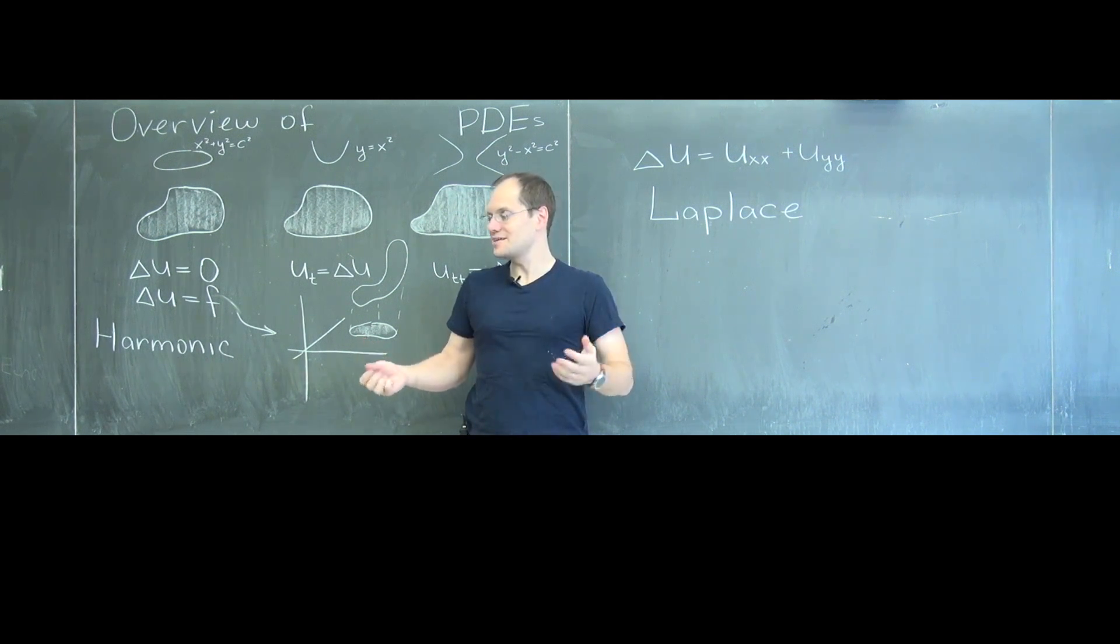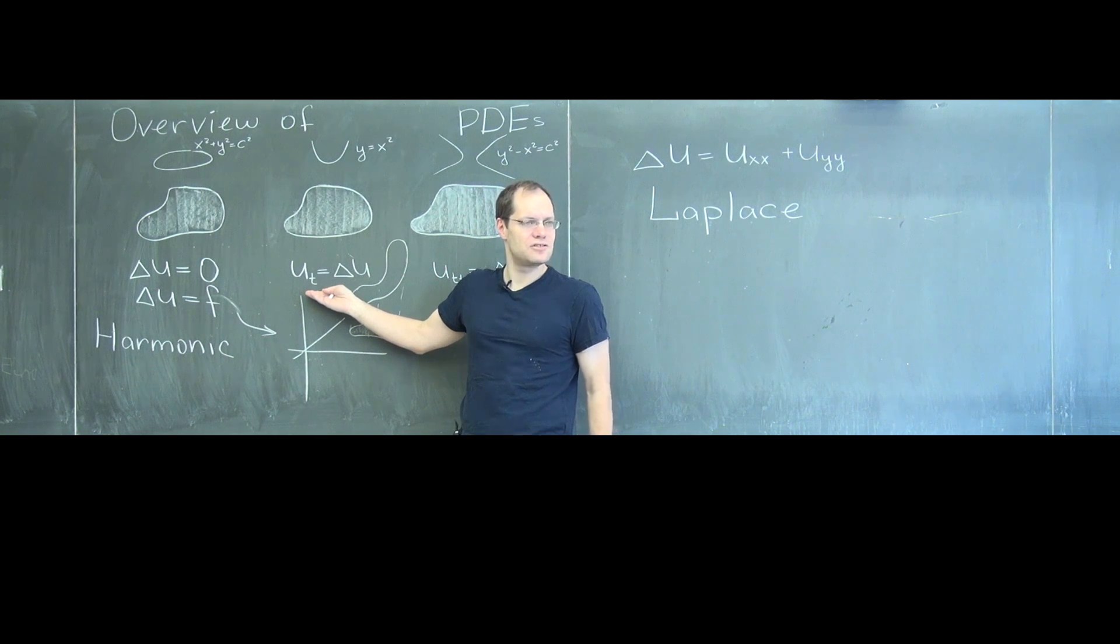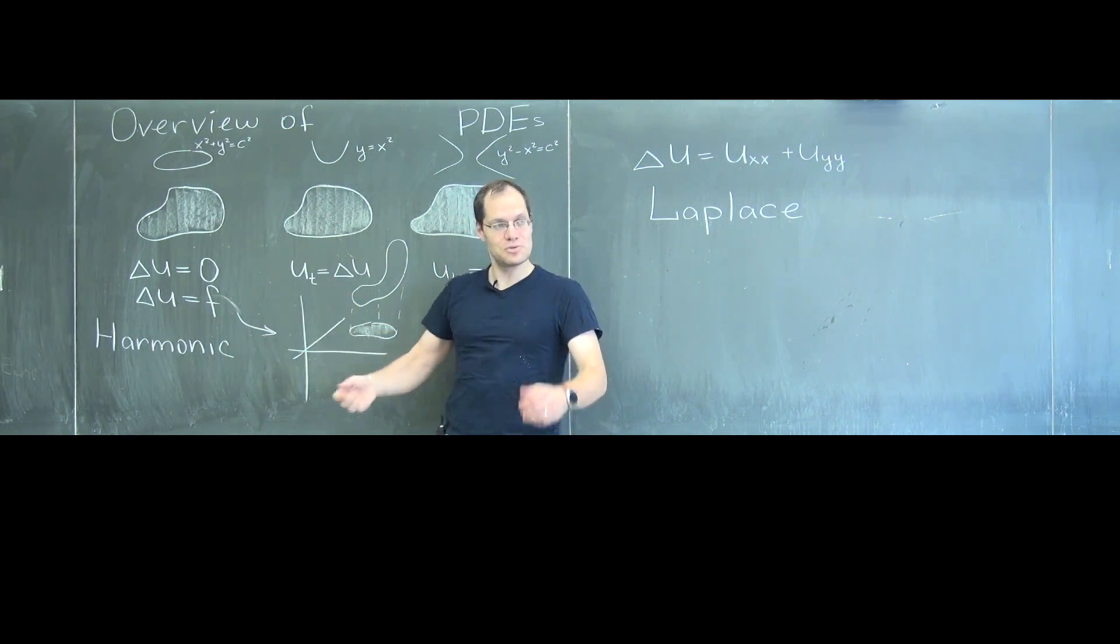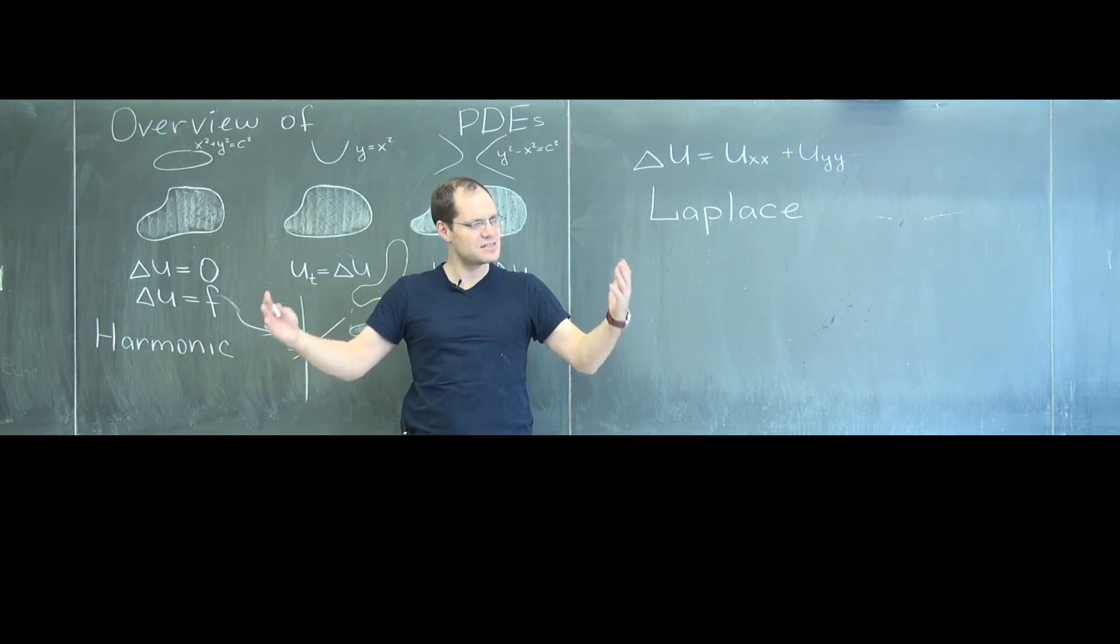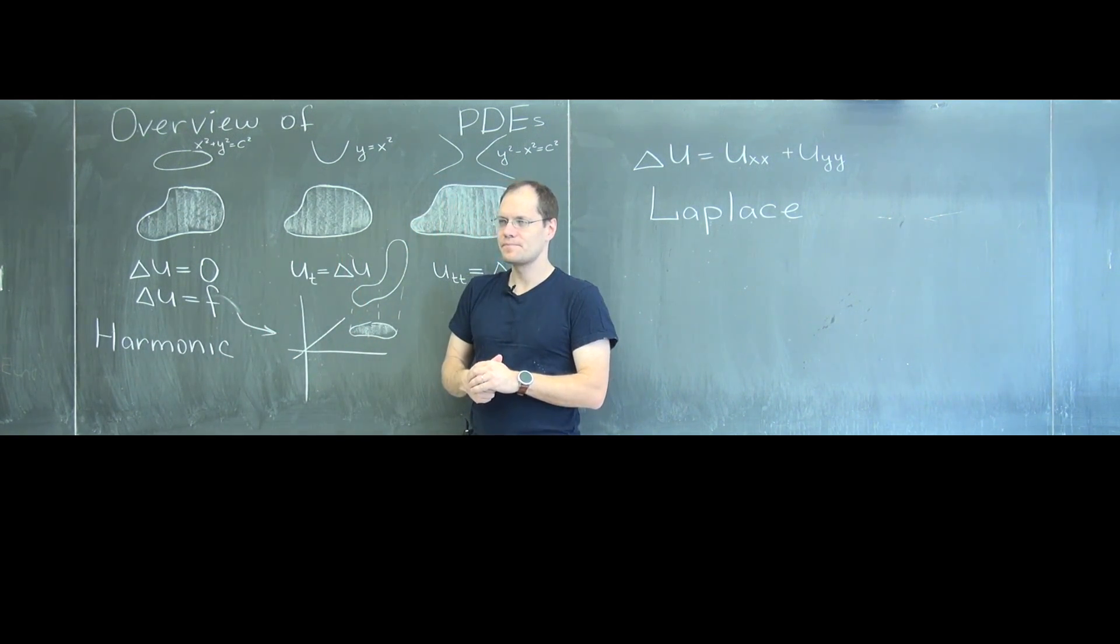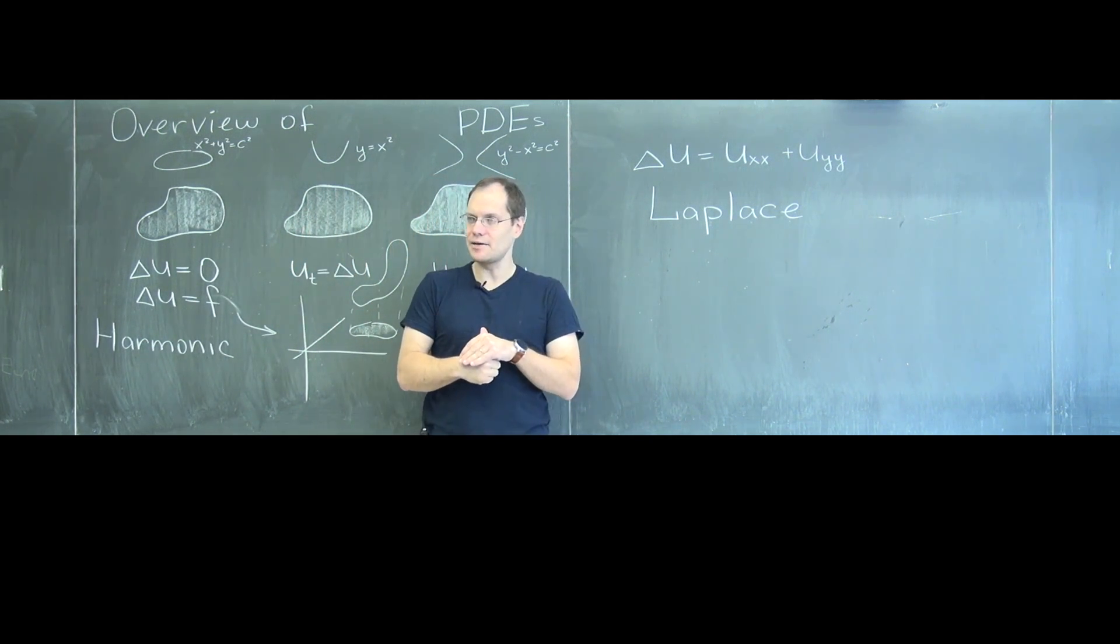Of course it needs to start somewhere—this describes an evolution, and for any evolution you will want to know where it started. So you will say the temperature distribution in the initial moment is this function of x and y. And then given the boundary conditions, which by the way may depend on time...